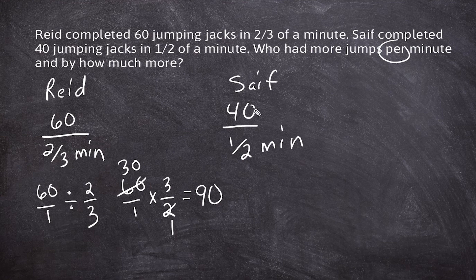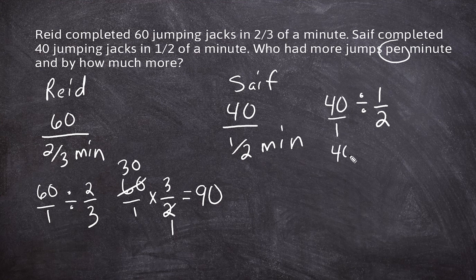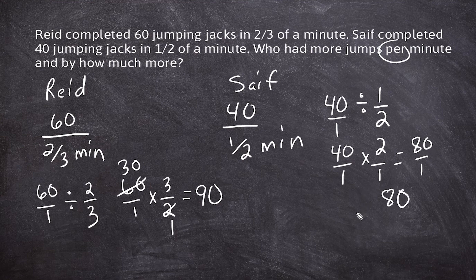For Safe, we take 40 and divide by one-half. Dividing the numerator by the denominator converts a rate into a unit rate. So 40 over one multiplied by two over one gives us 80 over one, which is 80. Comparing these unit rates, Reed completed more jumping jacks per minute — he completed 10 more than Safe.